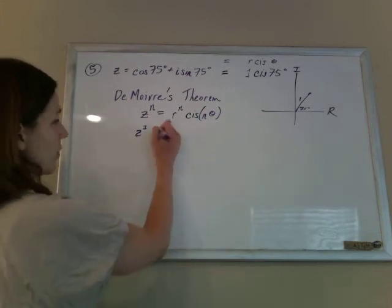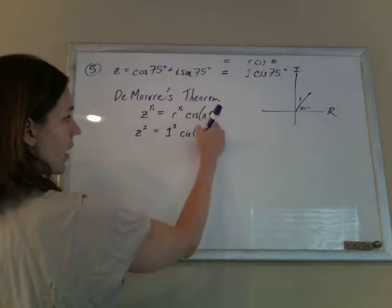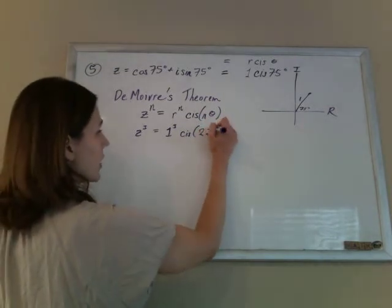So, easy enough, the radius here was 1, we're going to cube it, and the original angle was 75, we're just going to multiply that by n, 75 times 3, oh the hardest part, 225, yes.